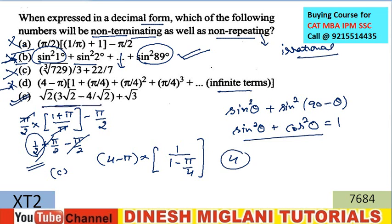When you simplify option E, you get a term under a root that is irrational. Any number that is non-terminating and non-repeating is irrational. Specific irrational forms include: any imperfect square under a root, any number containing π, logarithmic irrational numbers, and exponential irrational numbers. So when you check all the options and simplify, the answer is E — E is an irrational number.